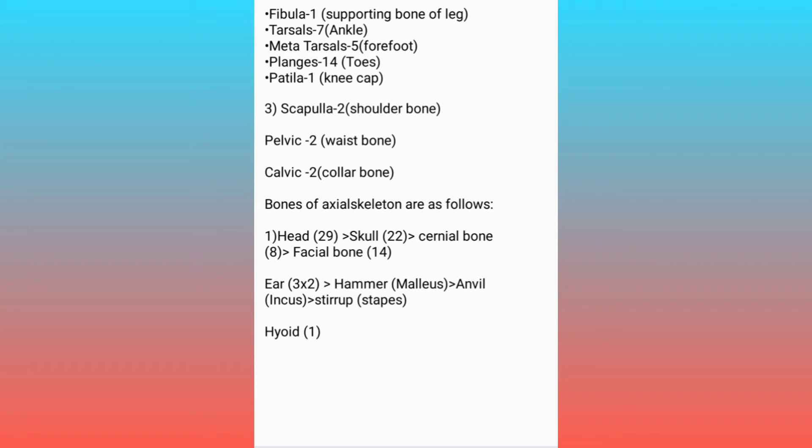Ear bones: malleus 1, incus 1, stapes 1. We have two ears, so multiply by 2: 1 plus 1 plus 1 is equal to 3, and 3 into 2 is equal to 6 ear bones. Hyoid bone: 1.